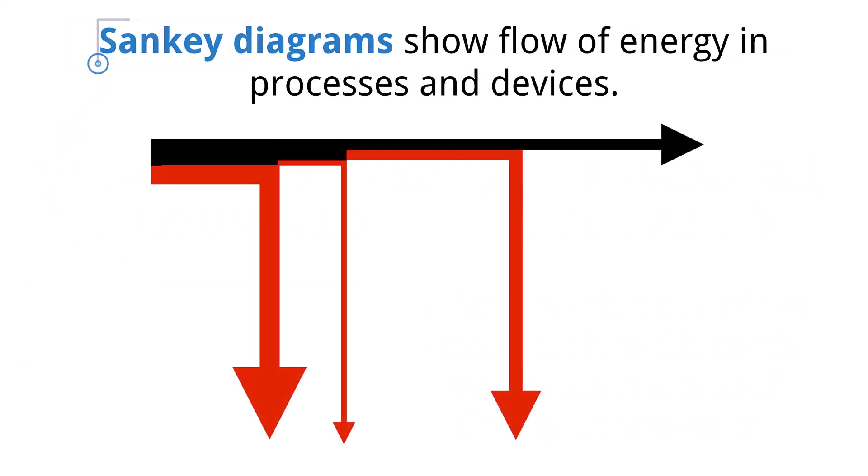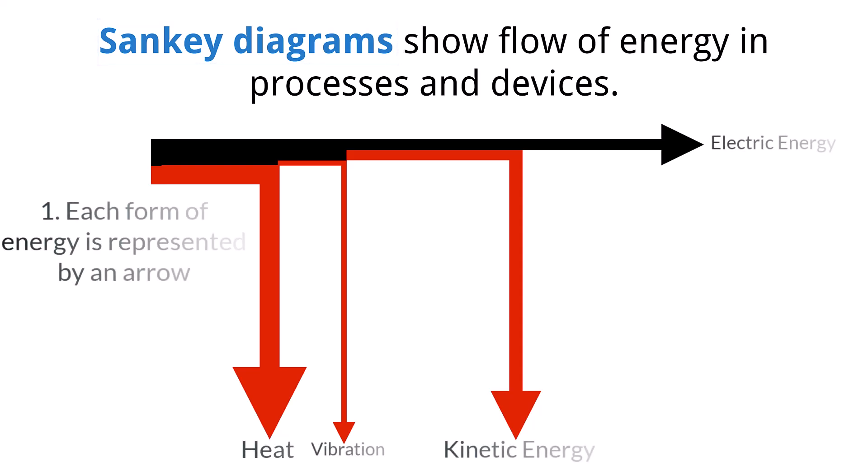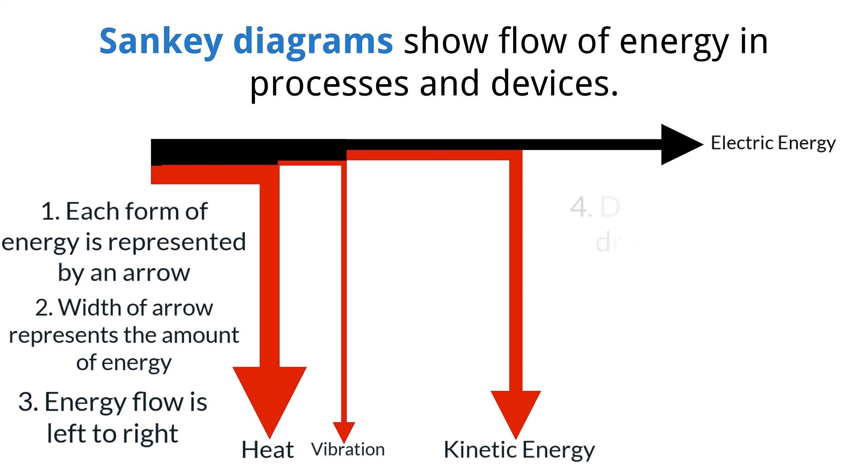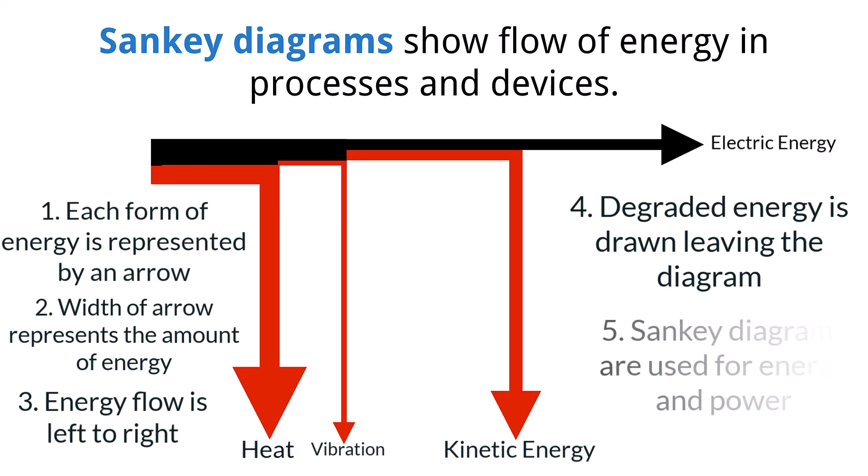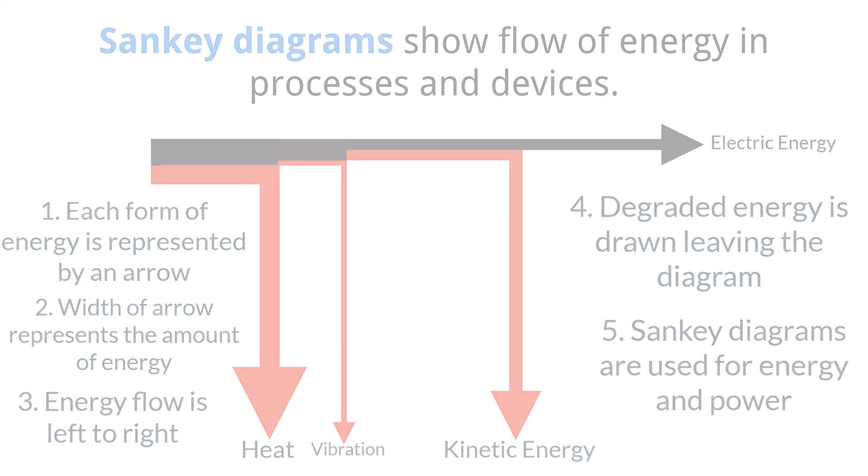To help visualize the transformation of energy in a system, or through a process, Sankey diagrams are a model that shows the flow of energy. There are a few rules to be aware of when using Sankey diagrams. 1. Each energy is represented by an arrow. 2. The diagram is drawn to scale, with the width of the arrow being proportional to the amount of energy transfer it represents. A wider arrow represents more energy, a skinnier arrow represents less energy. 3. The energy flow is drawn left to right. 4. When energy is lost from the system, it moves to the top or bottom of the diagram. This shows that the energy is now in a non-useful state that is referred to as degraded energy. And lastly, 5. The Sankey diagram can be used for power as well as energy.